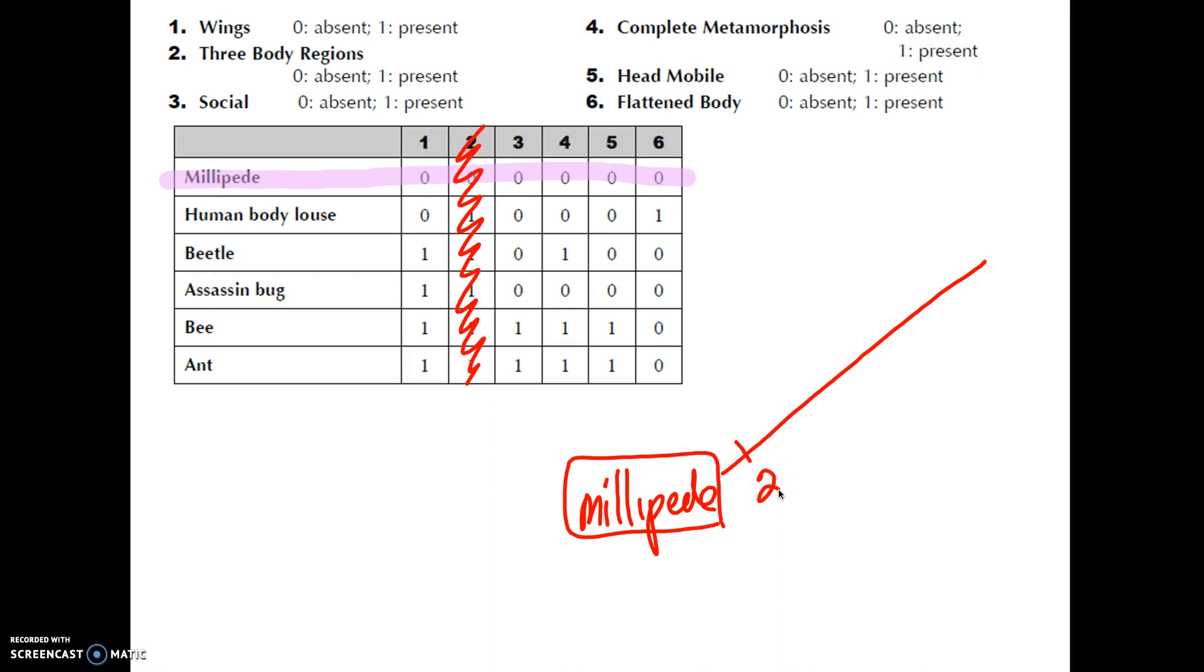Now, here's where it can get a little sticky. Is there an organism with all zeros? No. There is not an organism with all zeros. So here's what you're going to look for. Is there an organism that has mostly zeros and the trait that they do have is unique to them? And the answer is yes, the body louse. He has almost all zeros. And the one trait that he does have, trait six, he's the only one with it.